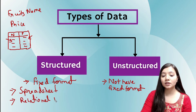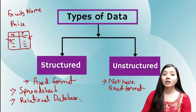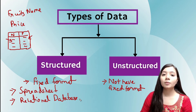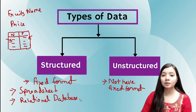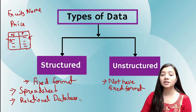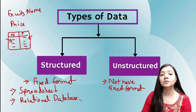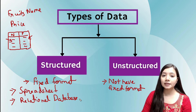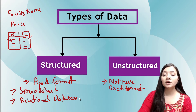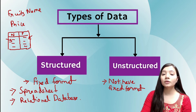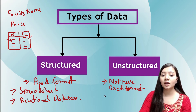Another example is a relational database. If you have heard about SQL — in a relational database, we first specify the schema, which defines which columns the database contains and their names. Then we start inserting data into their respective columns. That is a very good example of structured data.